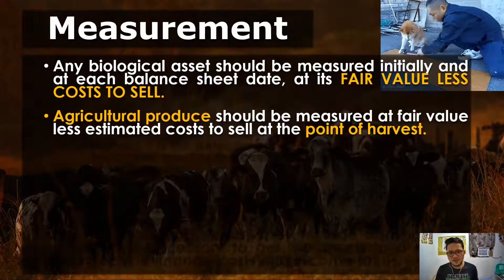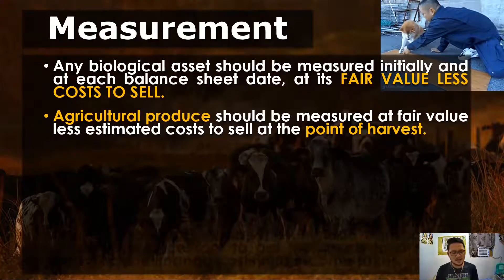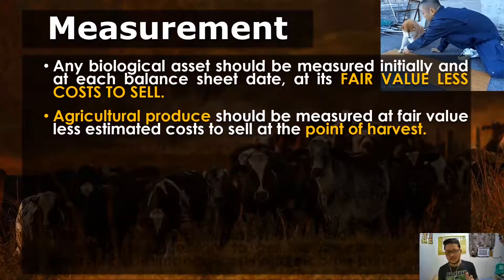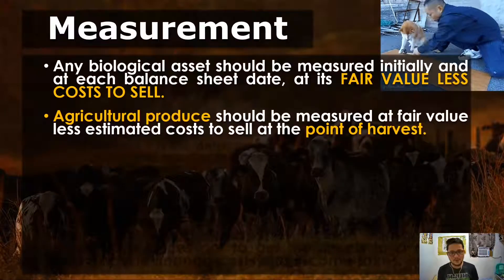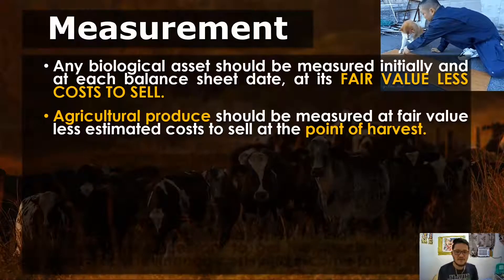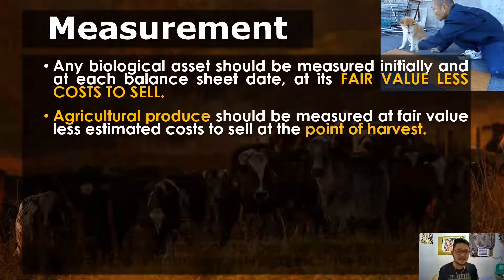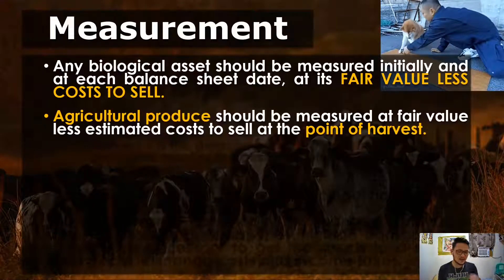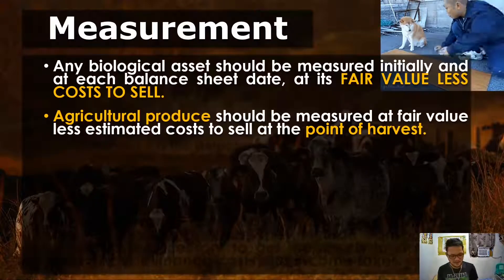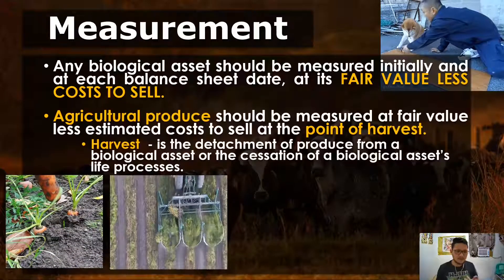Agricultural produce should be measured at fair value less estimated cost to sell at the point of harvest. We discussed agricultural produce in Part 1. Under PAS 2 — Inventories — you measure the item initially at cost. For agricultural produce, the deemed cost shall be the fair value less cost to sell at point of harvest. So take note: the initial cost of inventory when it is agricultural produce is FVLCTS at point of harvest.